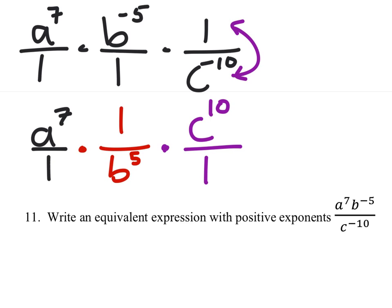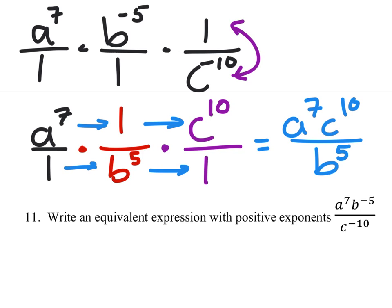At this point we can just multiply all the numerators. So a to the power of 7 times 1 times c to the power of 10. We don't really need the 1 there. And in the denominator, 1 times b to the 5th times 1 would be b to the power of 5. And that would be our final answer.